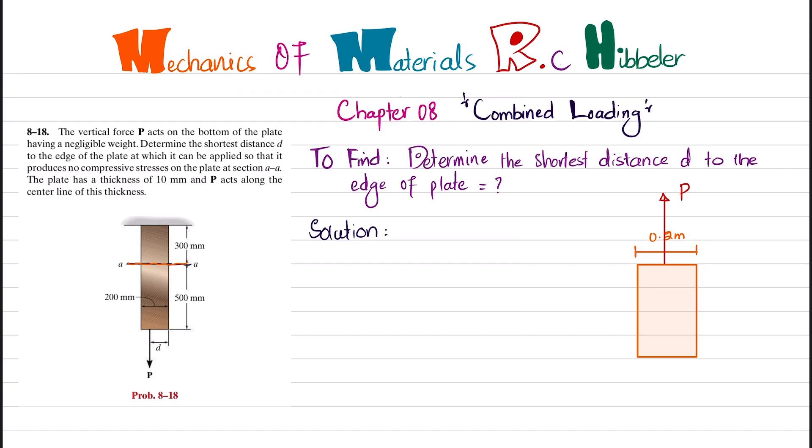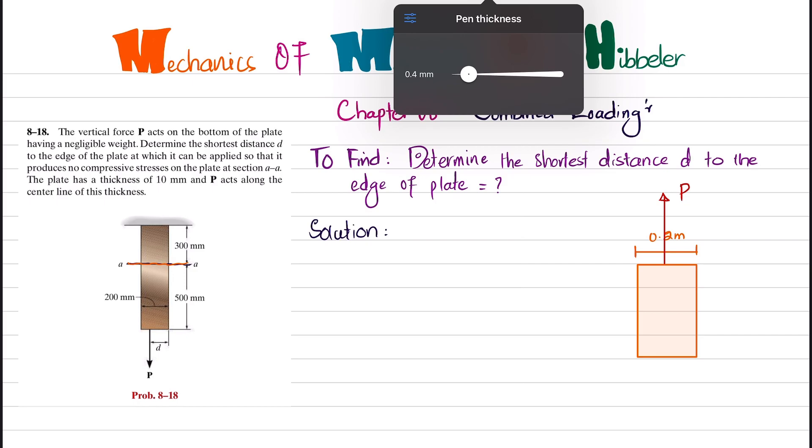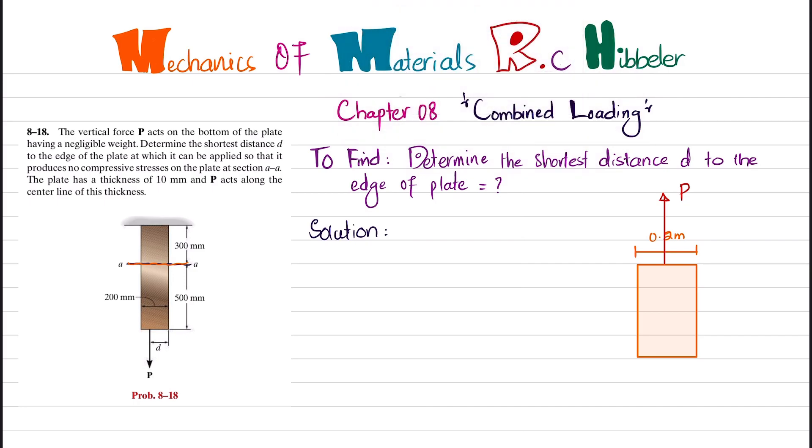This width of the plate is 200 mm which equals 0.2 m. This force is represented as, let this force equal P, or we can take it as N. P is applied at a distance of D from this edge. When you cut it, you will also have a moment M. This distance is 0.1 minus D.